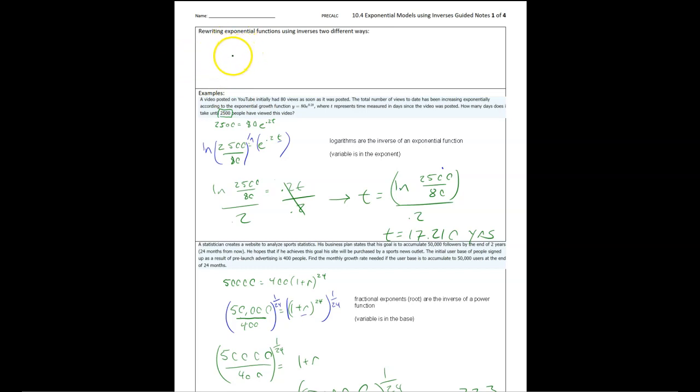In summary here, we have two different types of functions. We have something like a equals b to the x, and we have something like a equals x to the b. If I want to isolate both of these, this one is our first case, we're taking a log of both sides, and that allows us to rewrite like that. And then here, we're doing both sides to the 1 over b power, and we get x isolated like that.